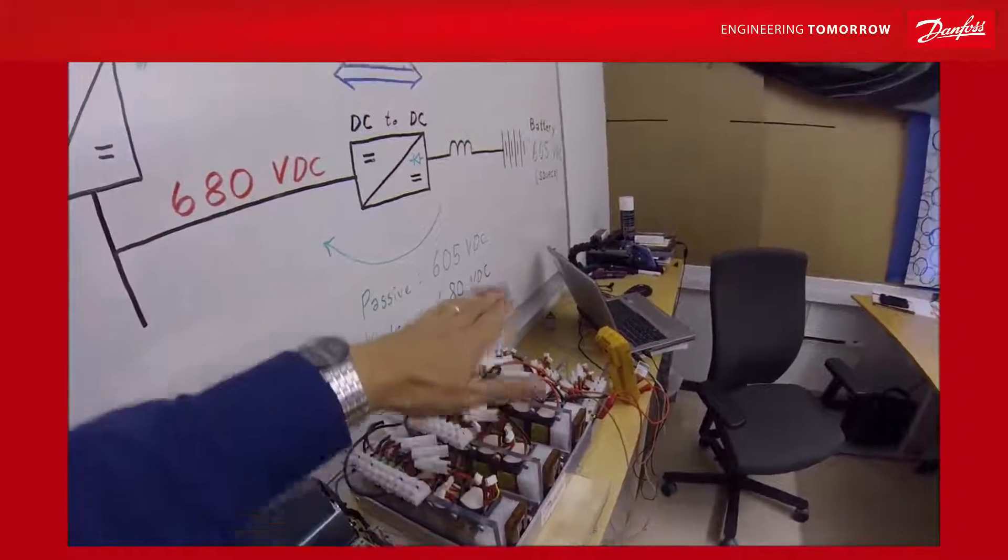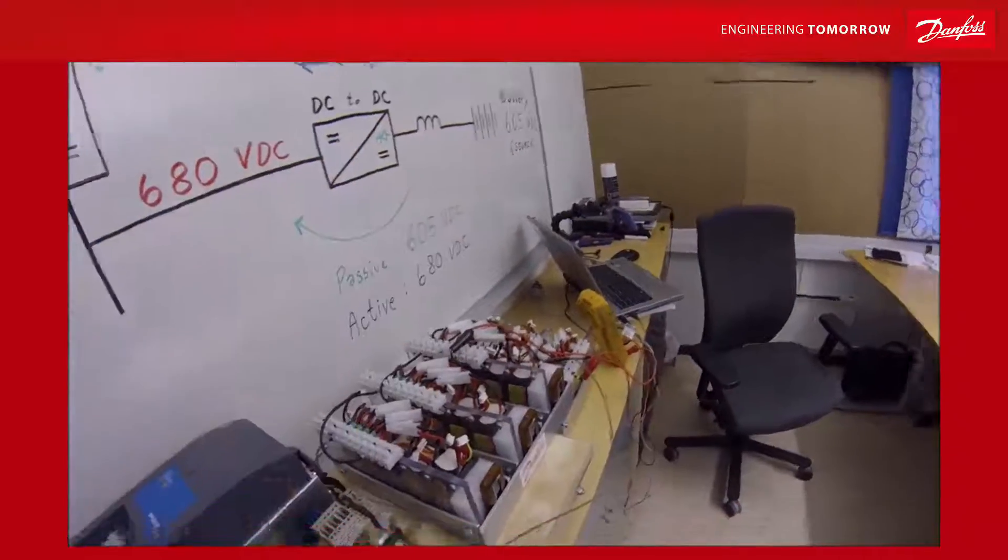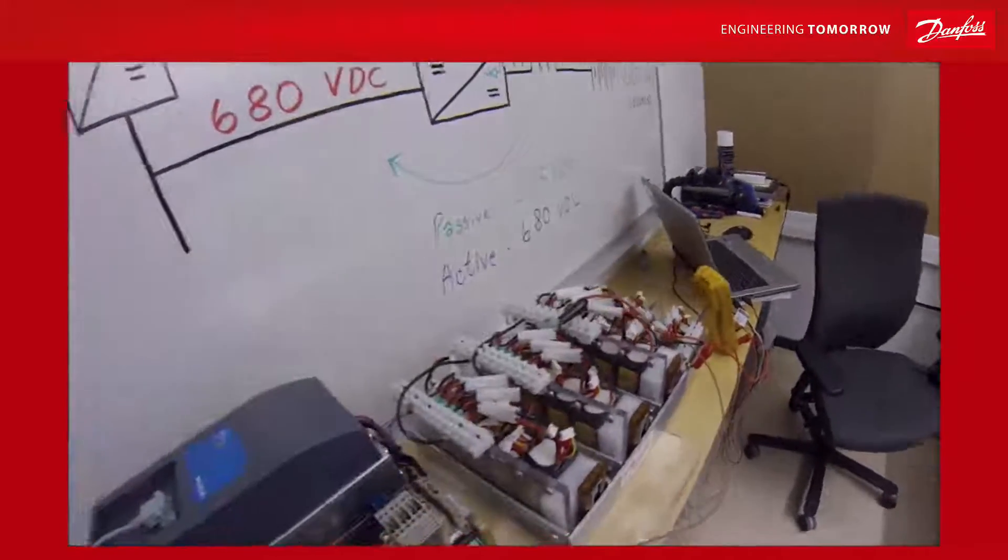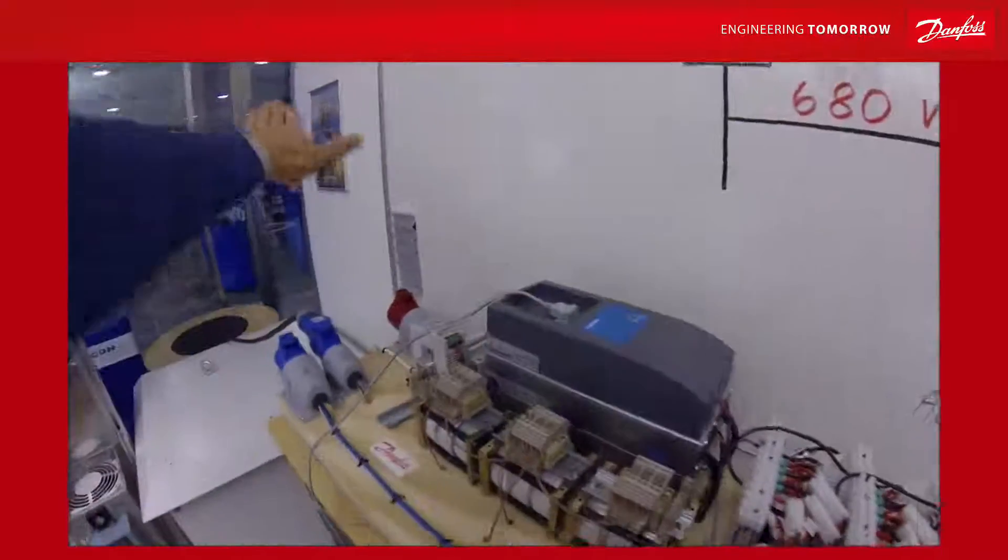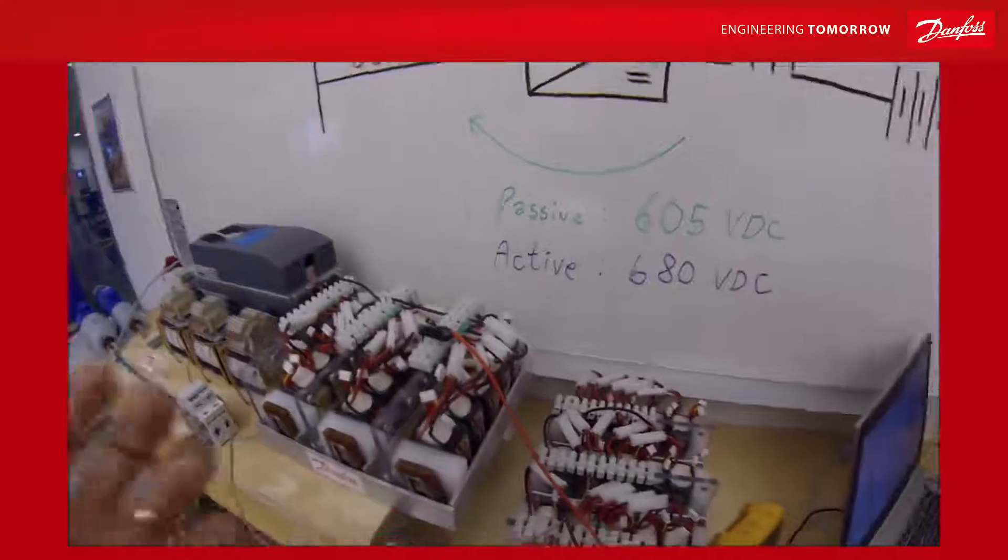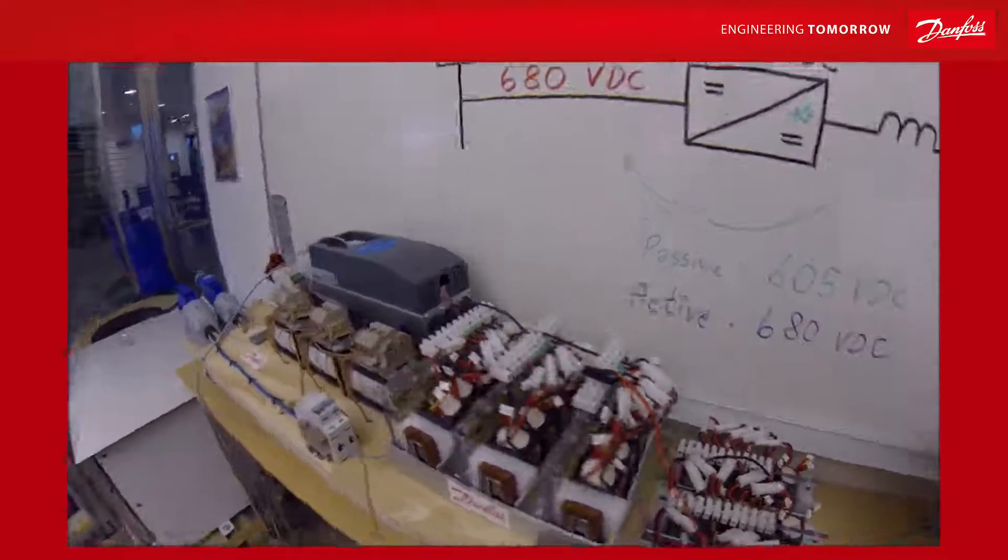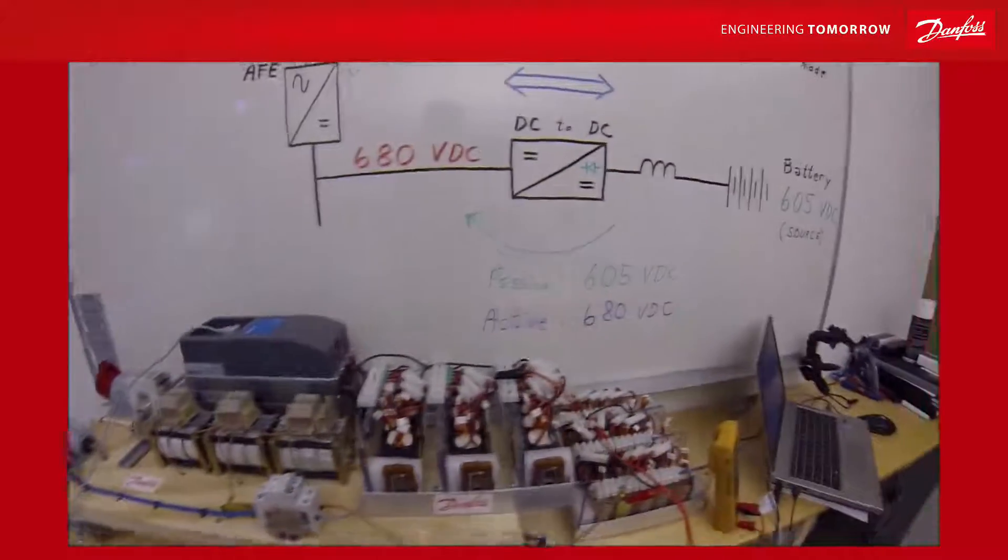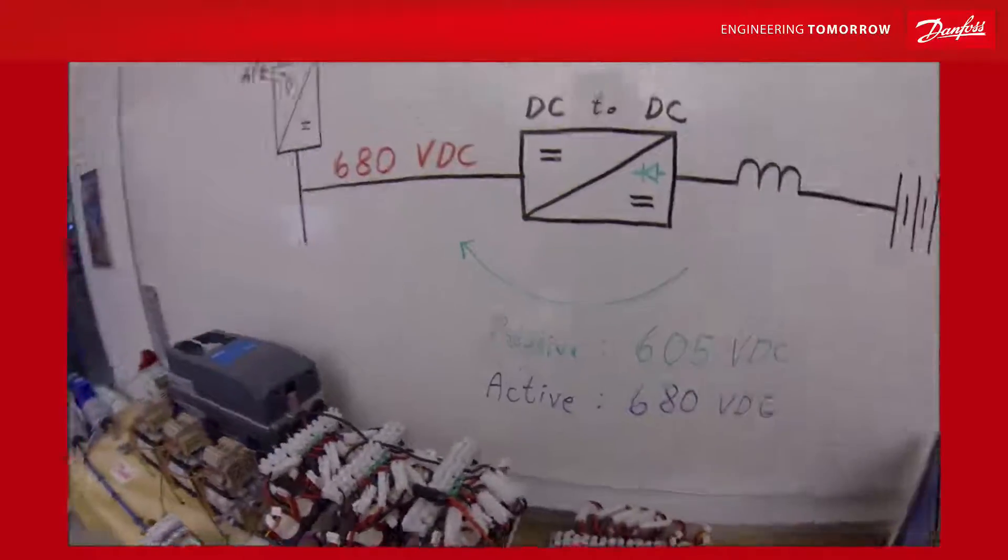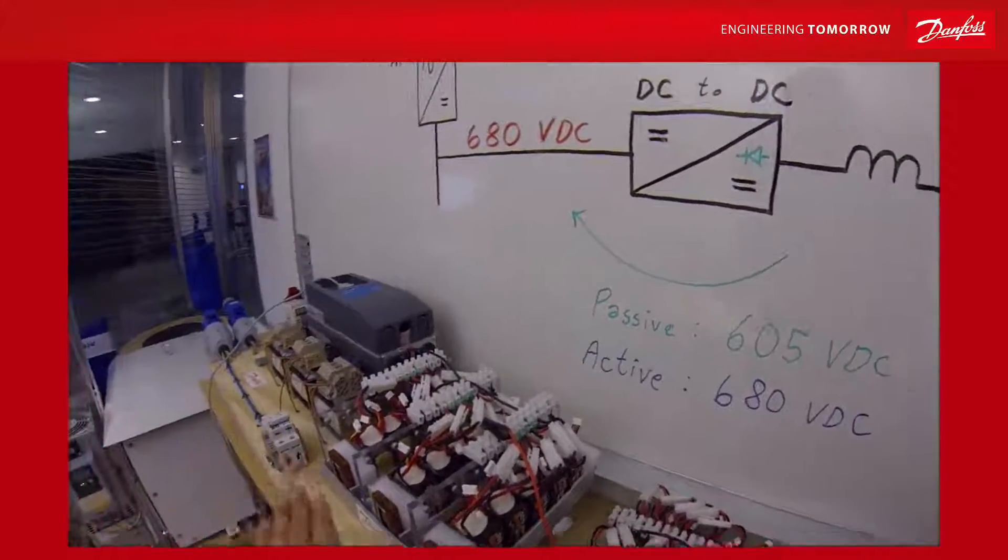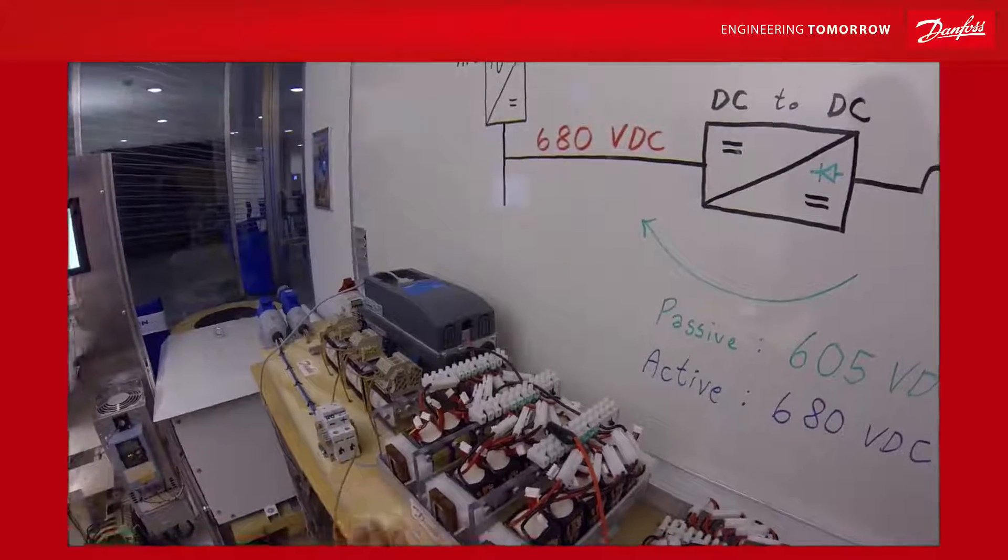If we try to force the voltage up, then the current will flow into the battery. If we try to force the voltage down, we'll go in opposite direction. We don't have that much control of the current. Of course you can run it against some current limits. But basically we just aim for a certain source voltage.